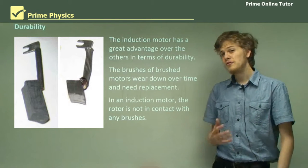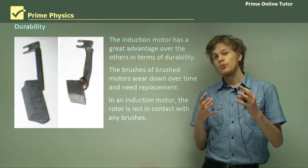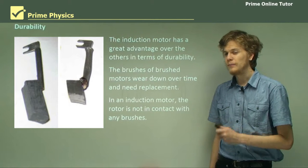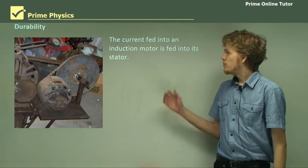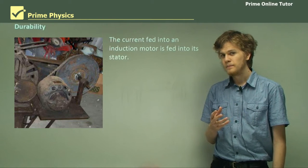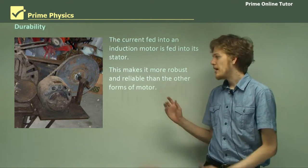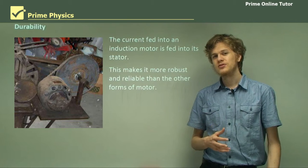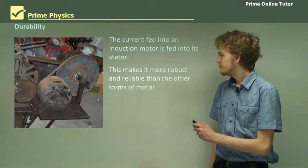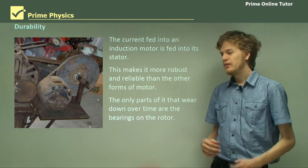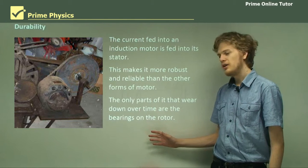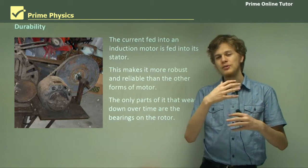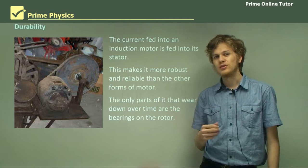The thing is an induction motor doesn't have any brushes. It causes the rotor to rotate without any contact between the stator and the rotor. This means that it will last longer. So the current in an induction motor is fed into the stator and it makes it a more robust and reliable form of motor. It doesn't fail quite as easily because it's easier to break the brushes or to wear them down. So the only parts of the induction motor that wear down over time are the bearings on the rotor. So that's the part connecting the rotor to the stator and allowing it to spin. There are no brushes involved. It's usually things like ball bearings.